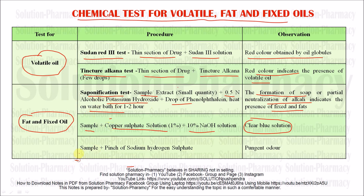The next test: take the sample and add a pinch of sodium hydrogen sulfate. A pungent odor is released. The pungent odor indicates the presence of glycerin, which is produced by the hydrolysis of fat or fixed oil present in the sample. This concludes the chemical identification tests for fat and fixed oil. Thank you very much for watching this video.